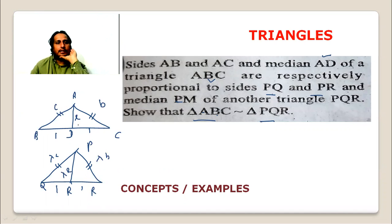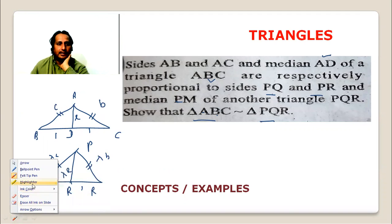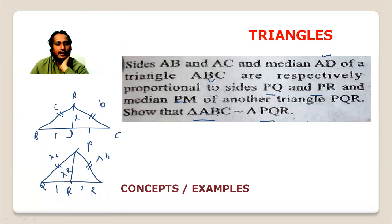Now focus here. If I want to get BD squared, then we use Apollonius' theorem. What is Apollonius' theorem? Apollonius' theorem says that AB square plus AC square equals two times median square AD square plus BD square.